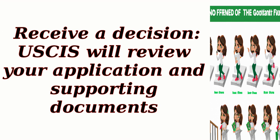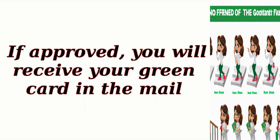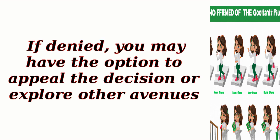Step 9: Receive a decision. USCIS will review your application and supporting documents. If approved, you will receive your green card in the mail. If denied, you may have the option to appeal the decision or explore other avenues.